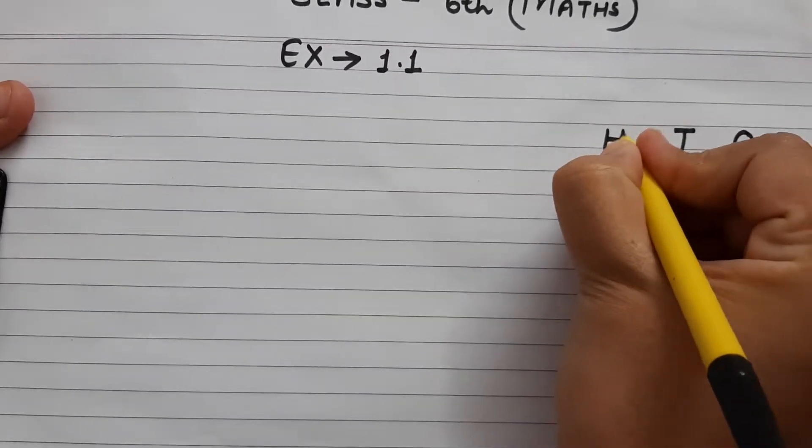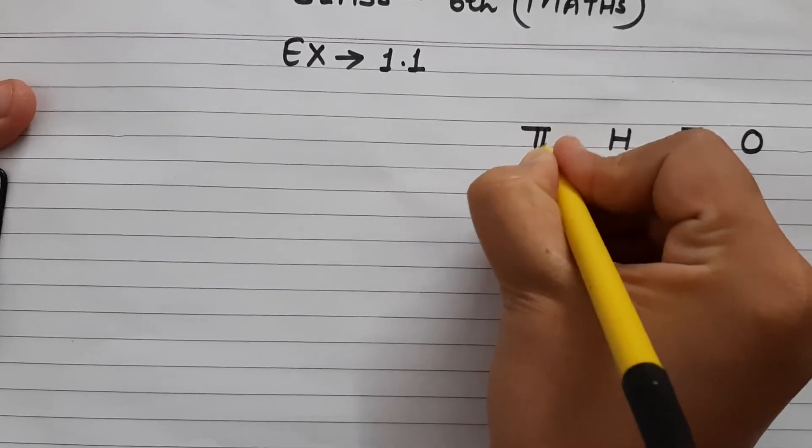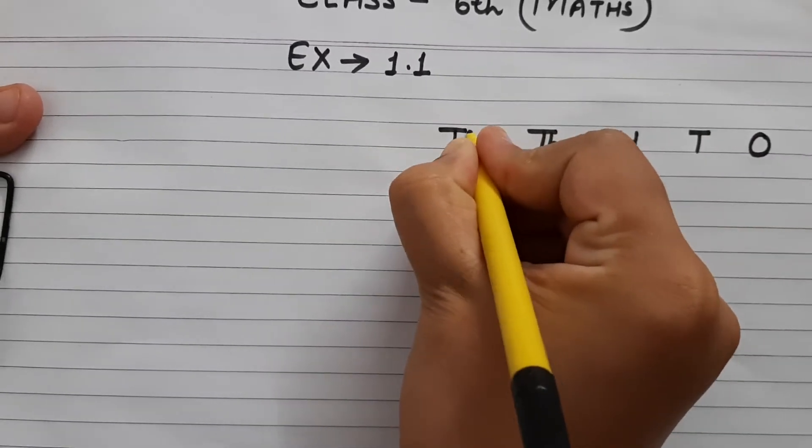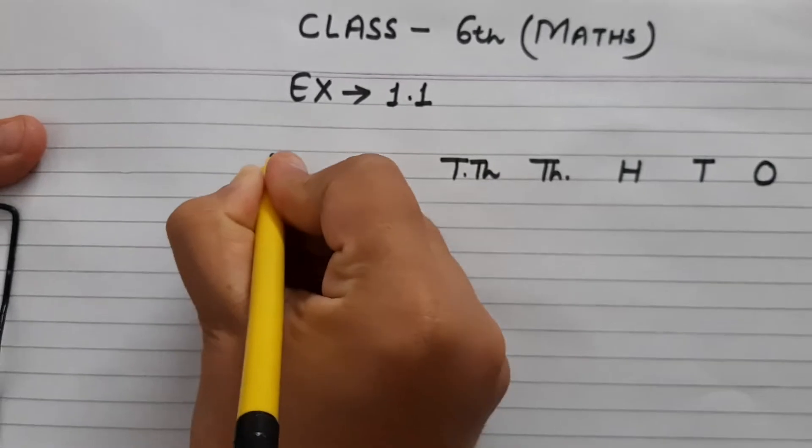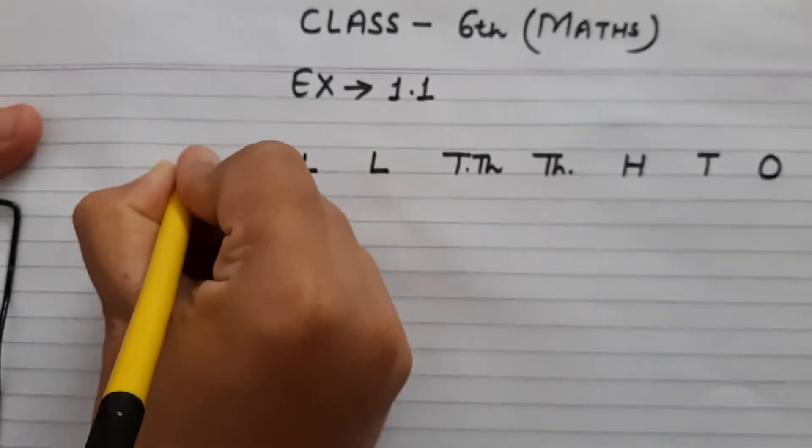Tens, hundred, thousand, then comes ten thousand, then comes lakhs, ten lakhs, crores, and ten crores.